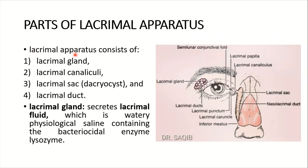There are four parts of the lacrimal apparatus. First is the lacrimal gland, second is the lacrimal canaliculi, third is the lacrimal sac or the dacryocyst, and the fourth part is the lacrimal duct or the nasolacrimal duct.